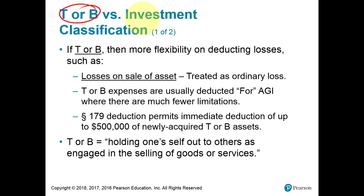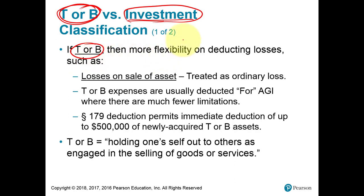Trade or business versus investment: definitely if you do have expenses, trade or business is better. Investment expenses — like an investment loss, which would be a capital loss — are subject to capital loss limitations. With trade or business, it's an ordinary loss and a deduction for AGI. In a future chapter we'll talk about net operating losses: if you have almost a negative AGI, you can actually carry back the business loss to a previous year and carry it forward to future years.